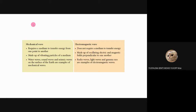How about the electromagnetic wave? For example, sunlight — how does sunlight reach the Earth even though there is no air particle at outer space? Because this is an electromagnetic wave; it doesn't need any medium to transfer the energy. It is made up of oscillating electric and magnetic fields perpendicular to one another. Examples include radio waves, light waves, gamma rays, and microwaves — all of these do not need a medium to transfer energy.